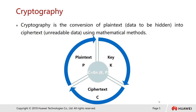First of all, let's talk about cryptography. Cryptography is the conversion of plain text — the data to be hidden — into ciphertext, which means unreadable information. The function of encryption technology uses a mathematical method. Here you can see a formula: C, which is the ciphertext, equals Encrypt, followed by the key and the plaintext.